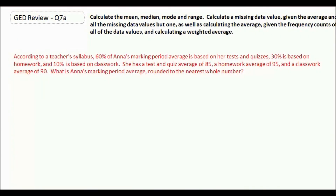The last thing we're going to do is calculate weighted average. According to a teacher's syllabus, 60% of Anna's marking period average is based on her tests and quizzes, 30% is based on homework, and 10% is based on classwork. She has a test and quiz average of 85, a homework average of 95, and a classwork average of 90. What is Anna's marking period average rounded to the nearest whole number?